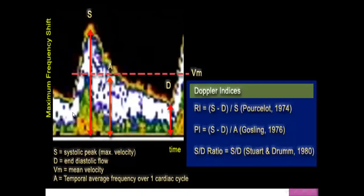Certain parameters are used in Doppler. S means systolic peak, D means diastole — systole and diastole. A is the average frequency over one cardiac cycle.